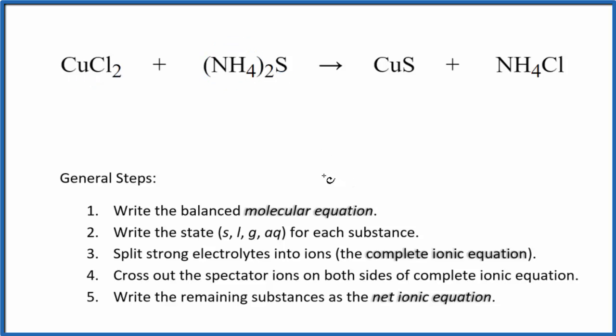The first thing we need to do with net ionic equations is balance the molecular equation. This is the molecular equation here. I can see there are two chlorine atoms here, just one here. Let's put a 2 in front of the ammonium chloride. That gives us two ammonium ions, and we have two ammonium ions here. Those are balanced, and we have copper and sulfur. So this is the balanced molecular equation.